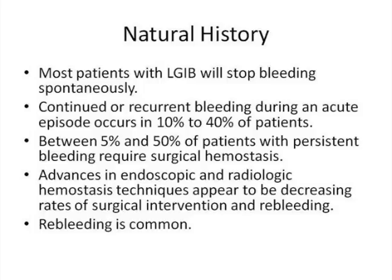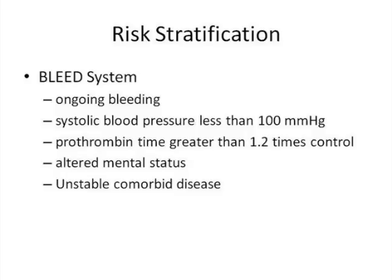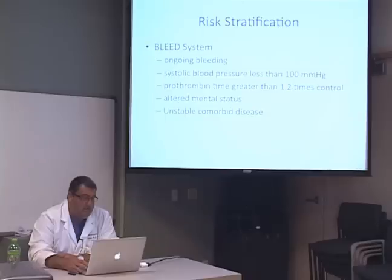Advances in endoscopy and radiology with new hemostatic techniques will decrease the rates of surgical intervention and re-bleeding, and those techniques are pretty effective. But re-bleeding is common. There are a number of ways to stratify patients according to risk of re-bleeding. One system is the BLEED system: ongoing bleeding, systolic blood pressure less than 100, PT greater than 1.2 times normal, altered mental status, or an unstable comorbid disease—these are patients with a higher chance of re-bleeding.